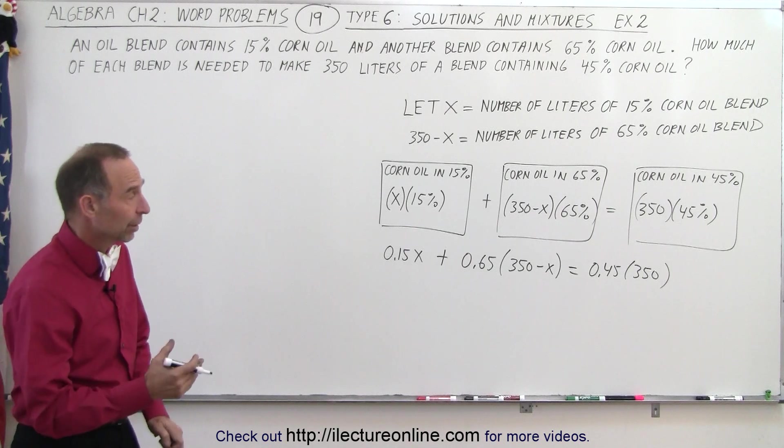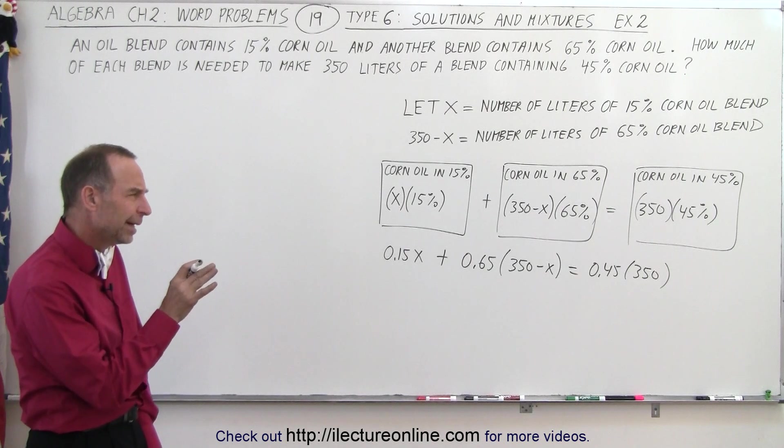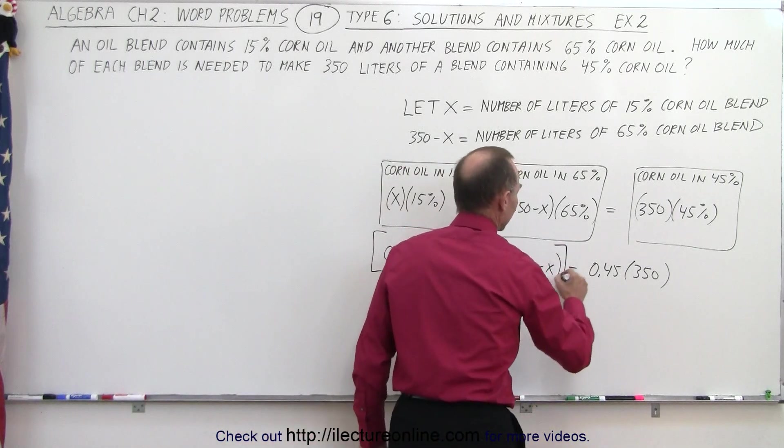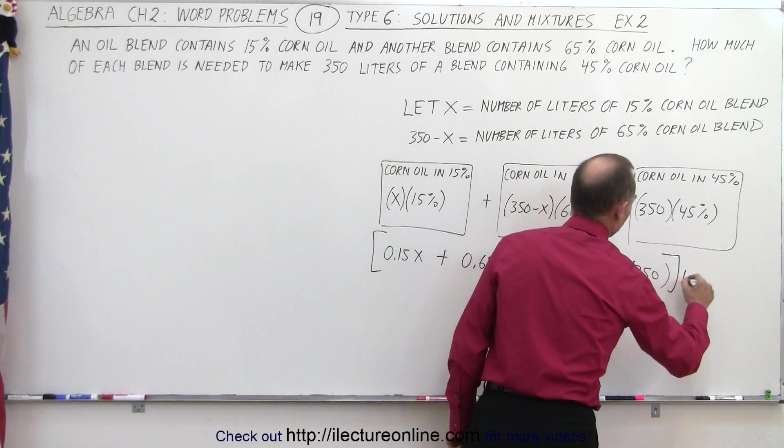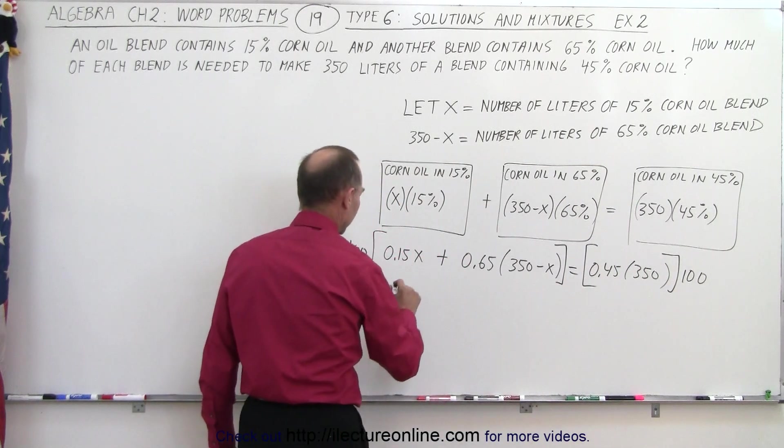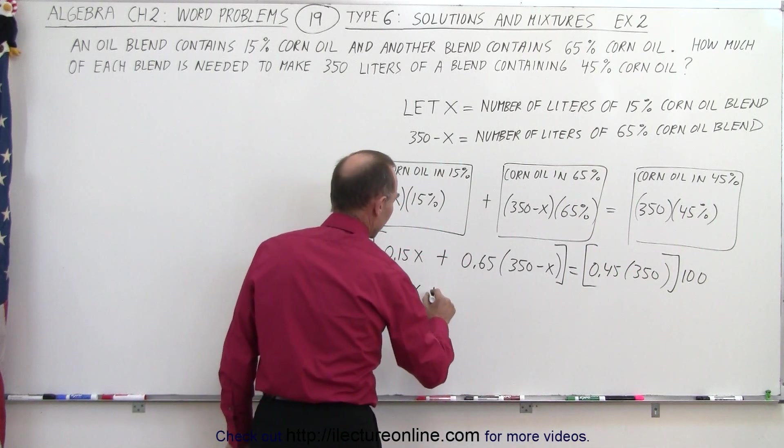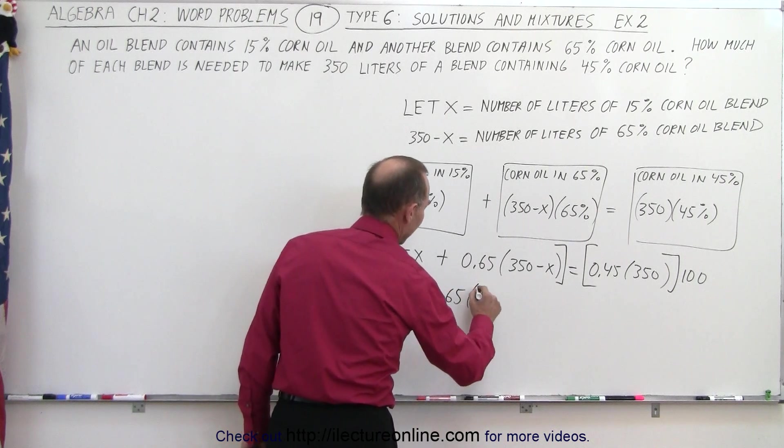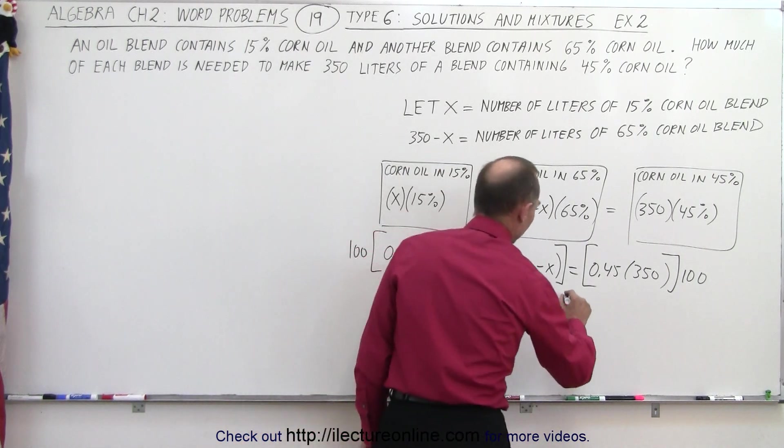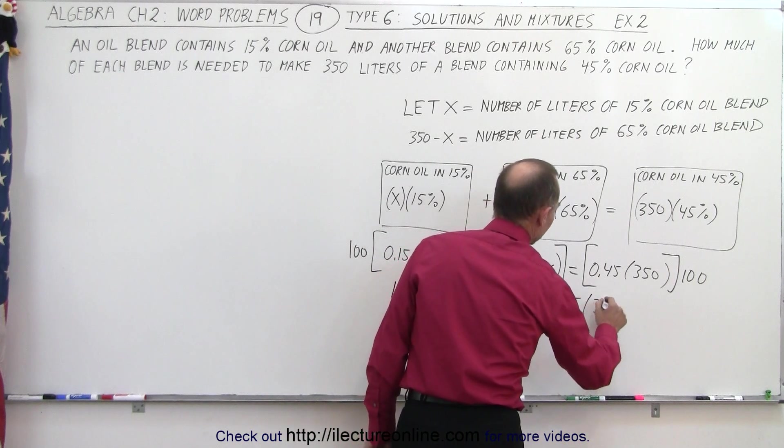Now we want to get rid of the parentheses. But before we do that, let's multiply both sides by 100 to get rid of the decimals. So we multiply the right side by 100, multiply the left side by 100. So this becomes 15x plus 65 times 350 minus x is equal to 45 times 350.